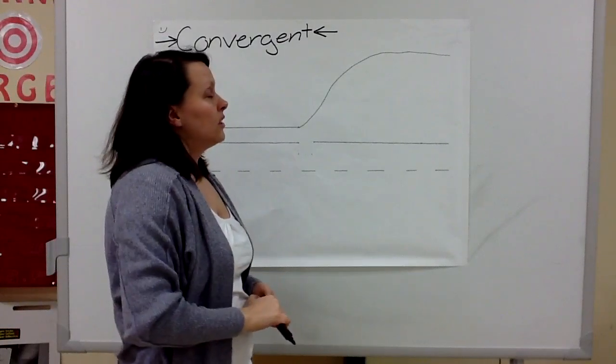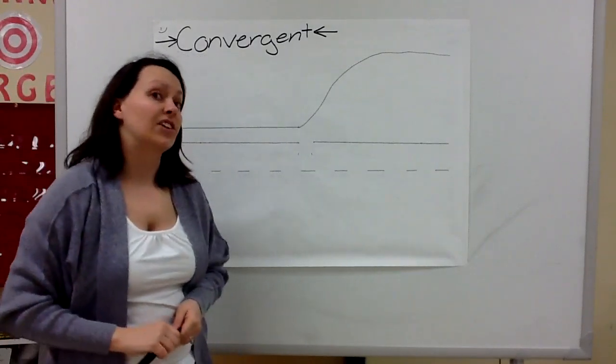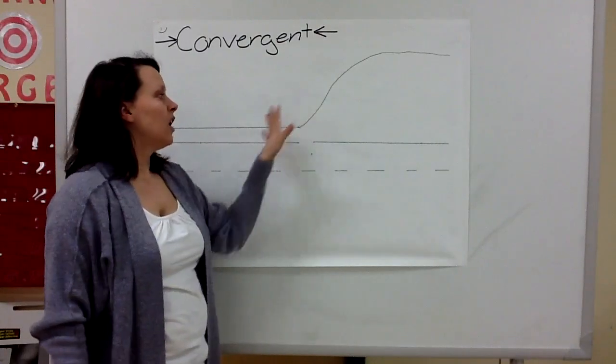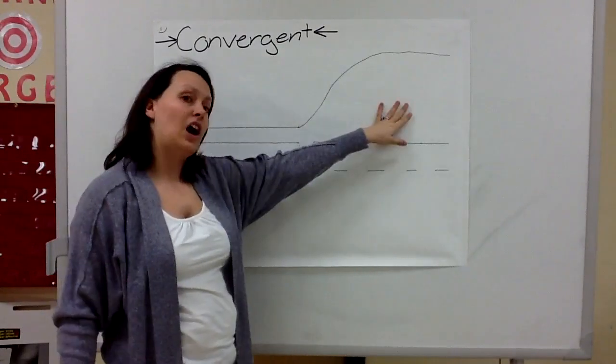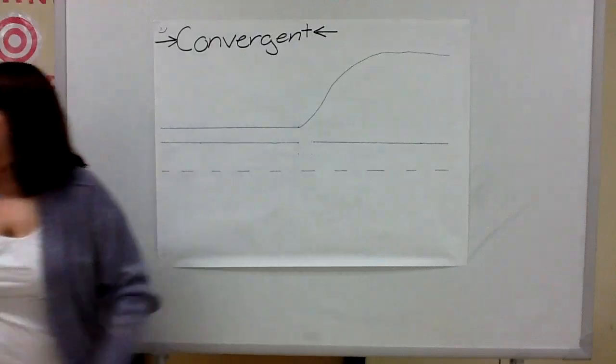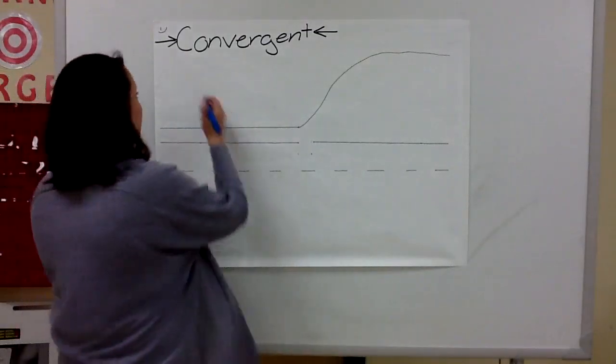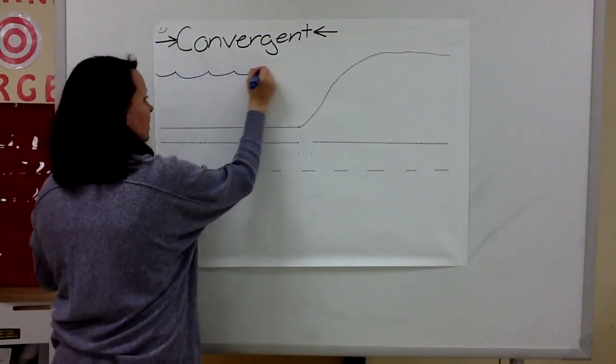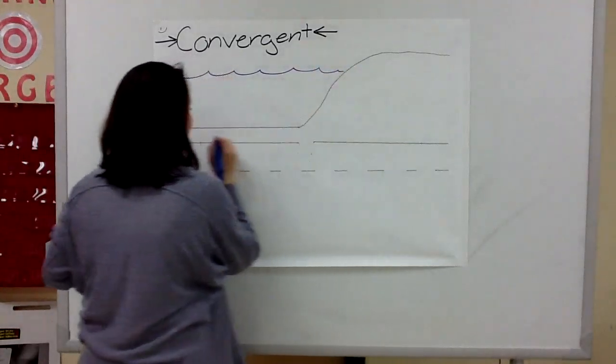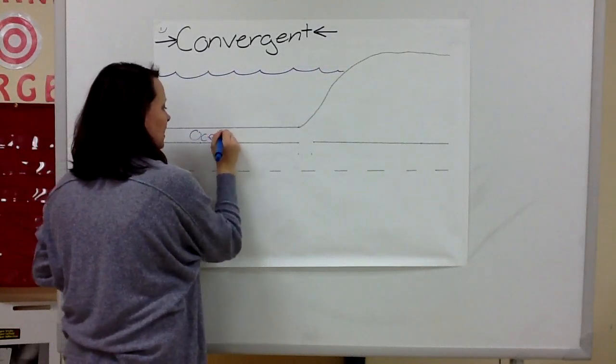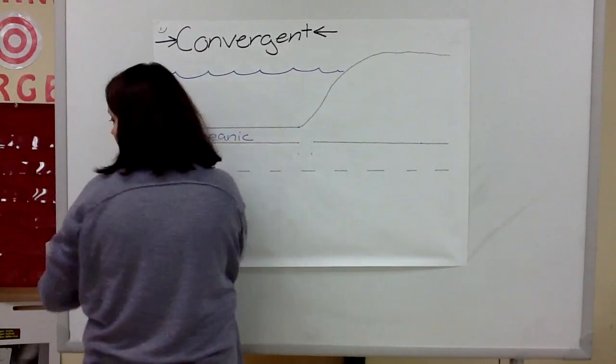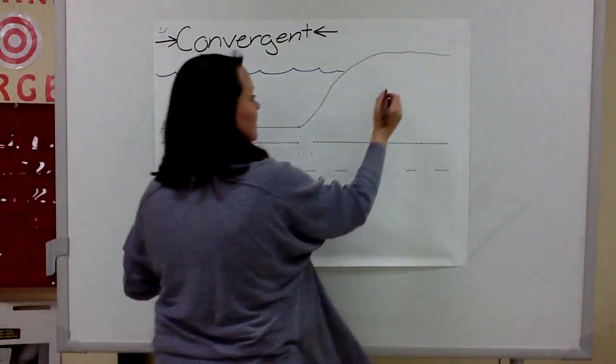Now convergent boundaries can create different landforms. Today we're going to be talking about oceanic versus continental. So let's add our water and label oceanic, continental.